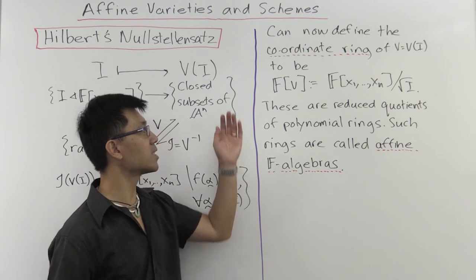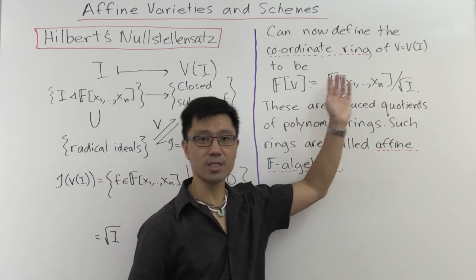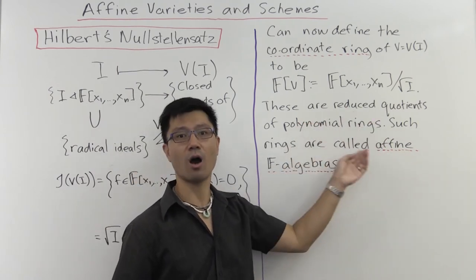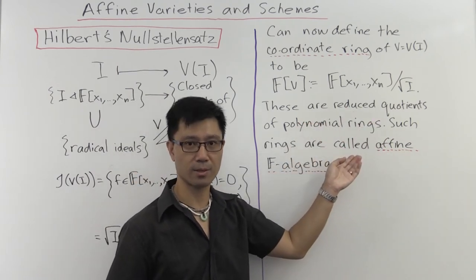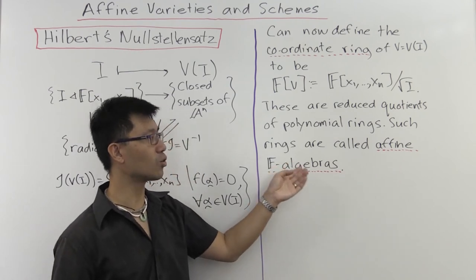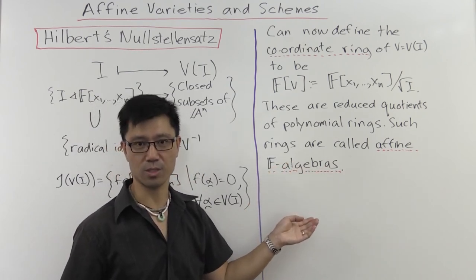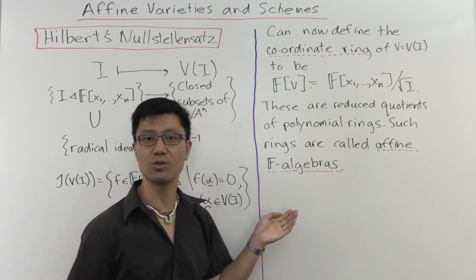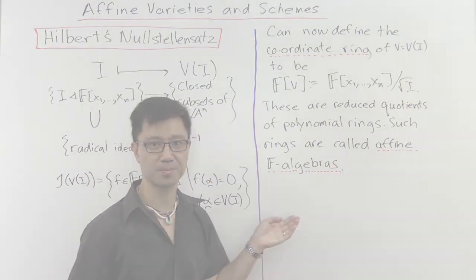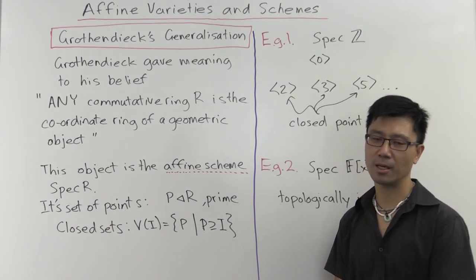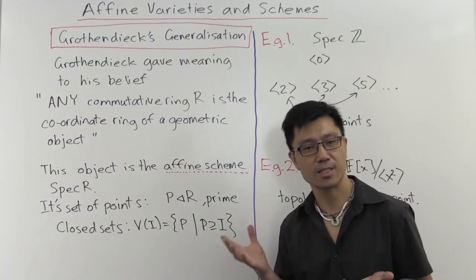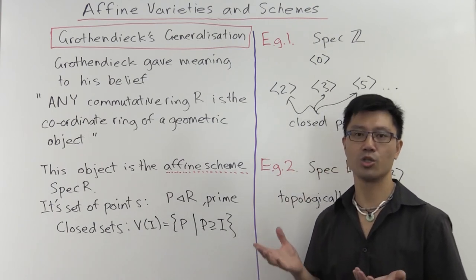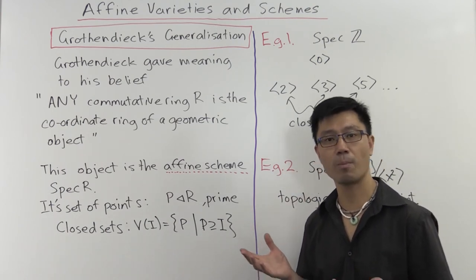The types of coordinate rings you can get are all reduced quotients of polynomial rings, and such rings are called affine f-algebras — the terminology comes from the fact that these correspond to affine varieties. To recap: Hilbert's Nullstellensatz says that the coordinate rings of varieties are precisely the reduced quotients of a polynomial ring.